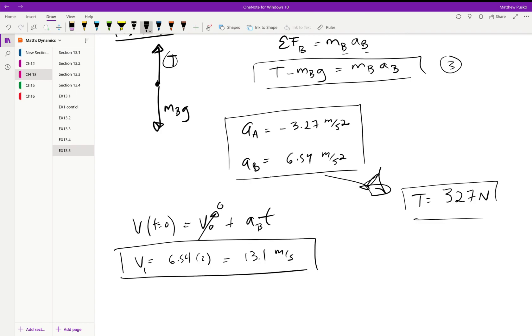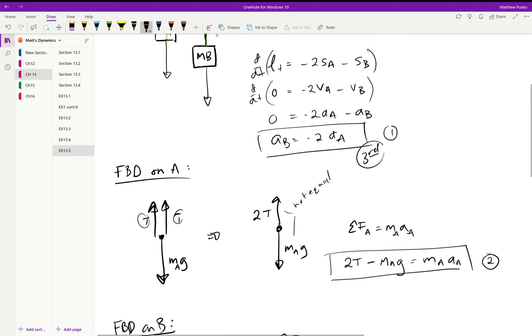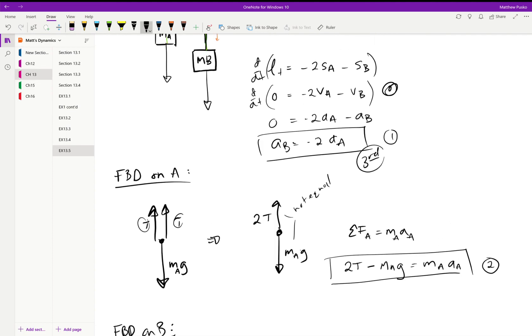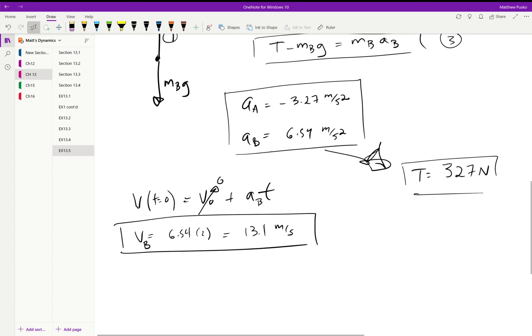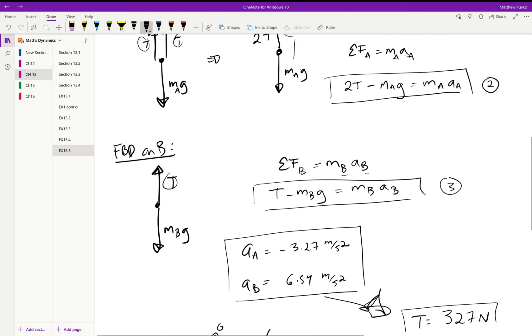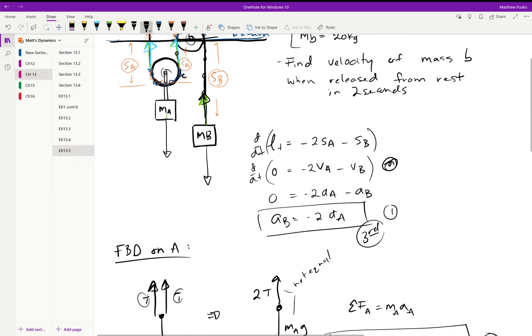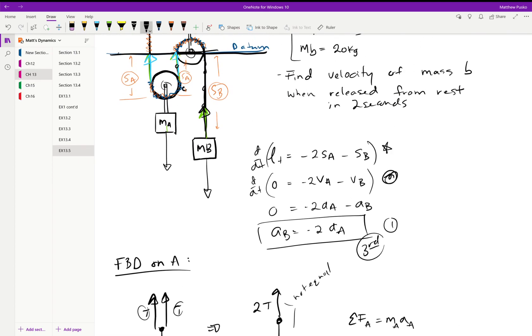If you wanted to find out the velocity of A we could go up here and stick it in this equation right here. And if it asked how far B has moved in two seconds, we could have done that too using kinematics. We would have needed that probably to relate the motion or the position of A and B.